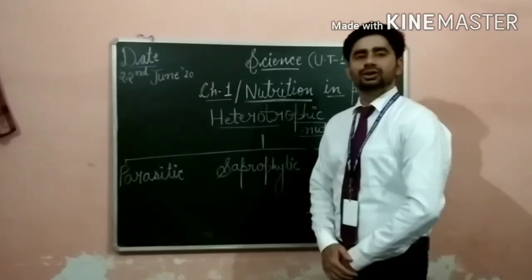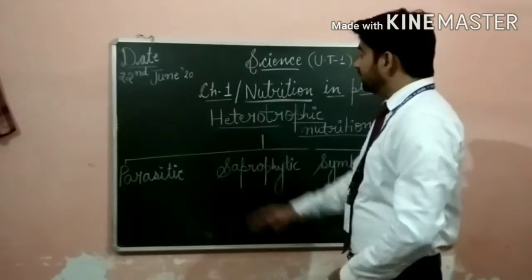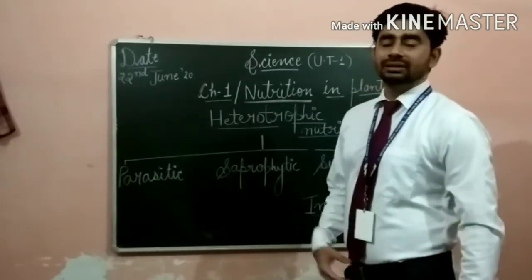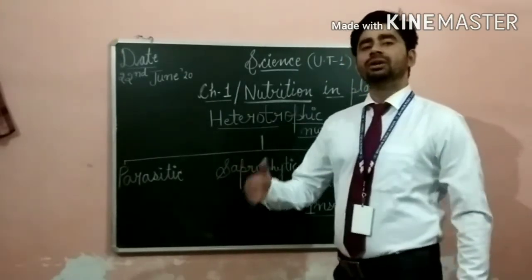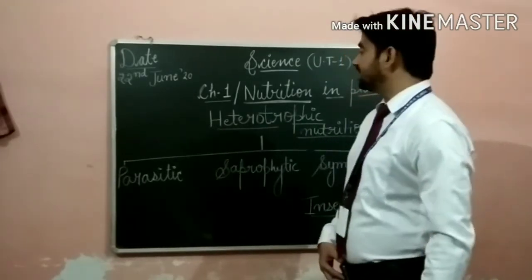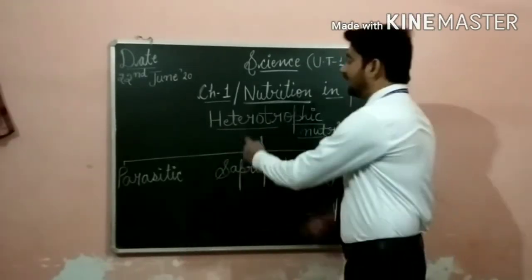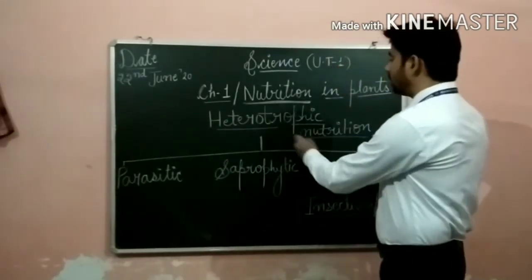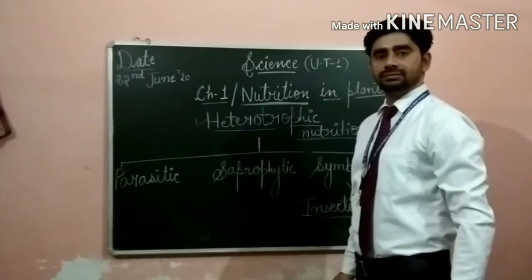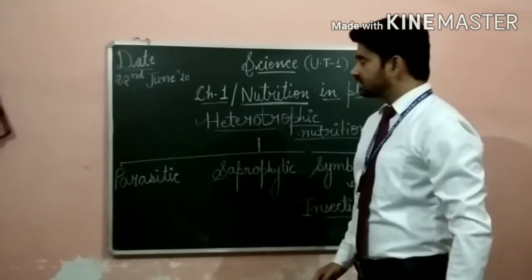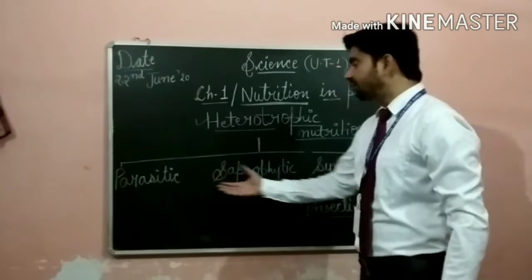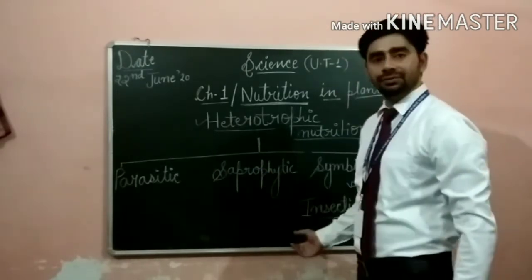Some organisms cannot prepare their food. They mainly depend on other plants and animals for their food. Such organisms are called heterotrophs and the nutrition is called heterotrophic nutrition. We will understand all four types of this nutrition one by one.